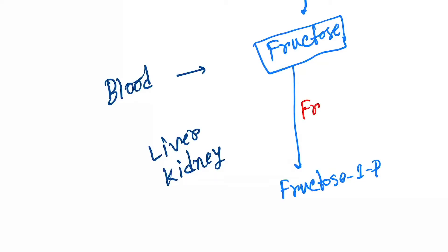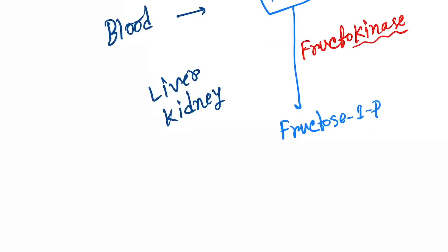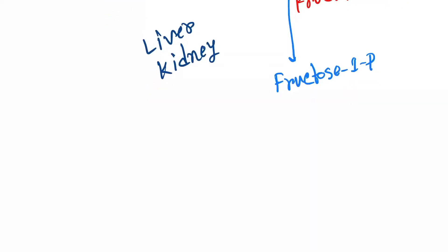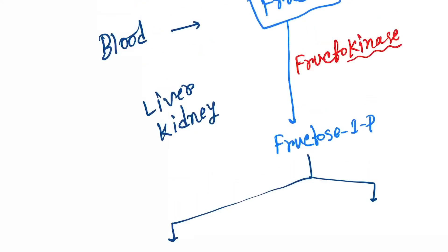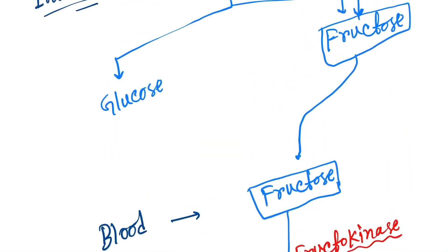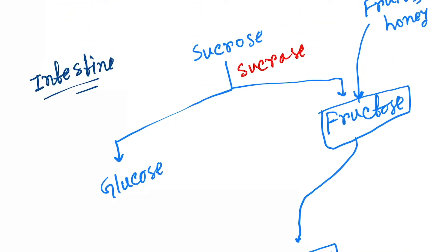This is done by fructokinase enzyme. Kinase means transferring of phosphate group. Next, fructose 1-phosphate will break down. Let's see this process in the picture.